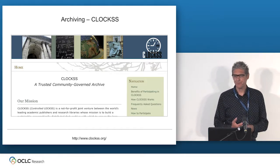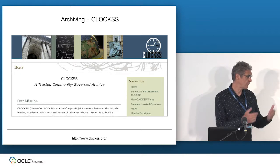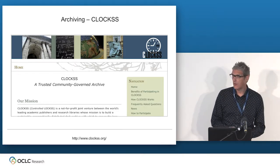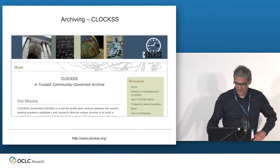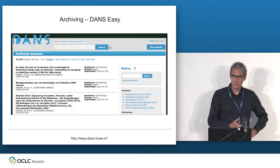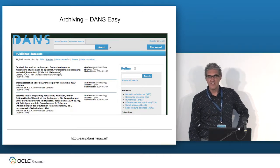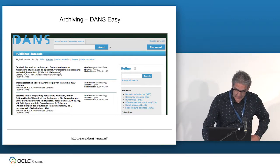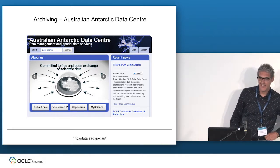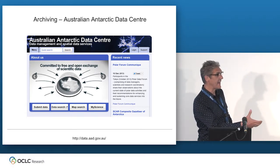A couple of examples regarding archiving. CLOCKSS is an interesting example — a consortium of publishers and libraries and institutions worldwide that look after preserving the journal publication record. DANS — a data archive specializing in social sciences and humanities. And the Australian Antarctic Data Center — again, a specialized kind of data archive for Antarctic observations.